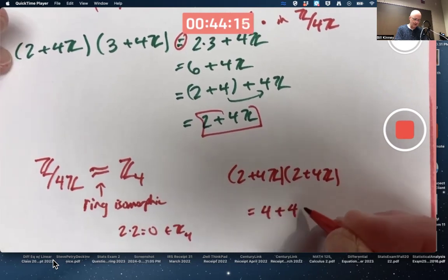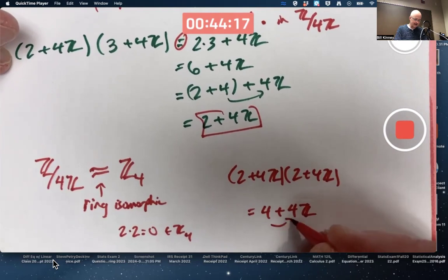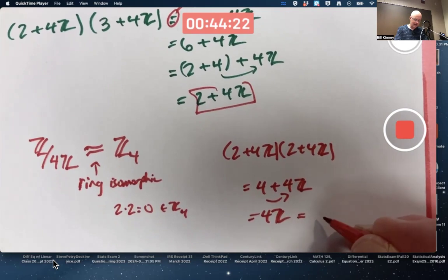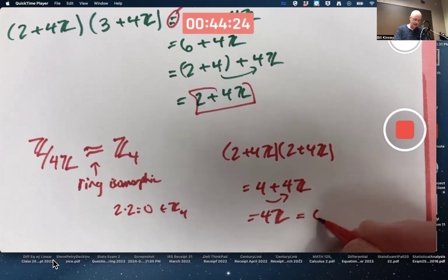You'd multiply the ring representatives. 2 times 2 is 4. And then the 4 gets sucked in. And that is the identity, the additive identity of the factor ring. It's the 0.